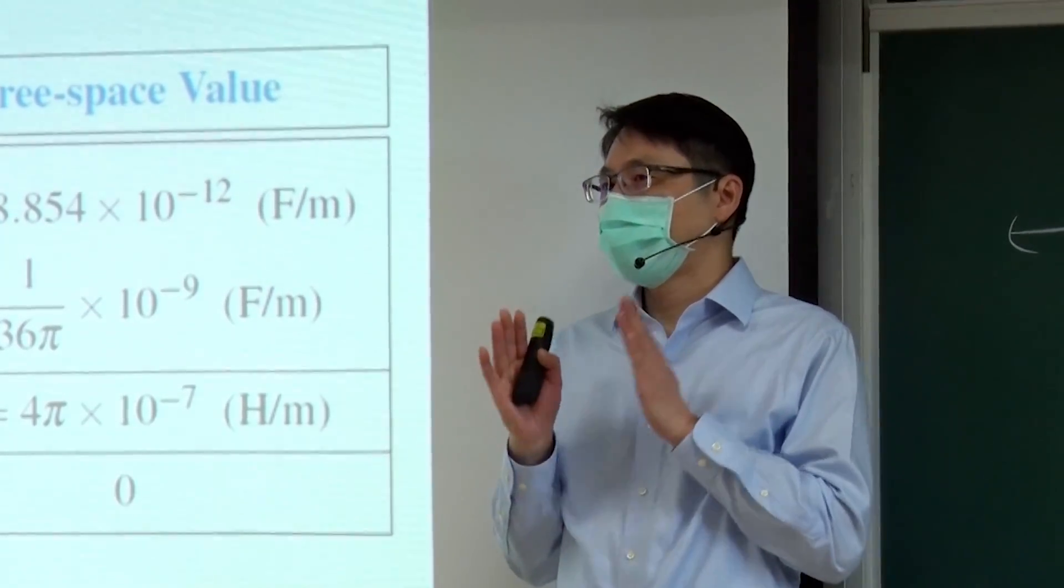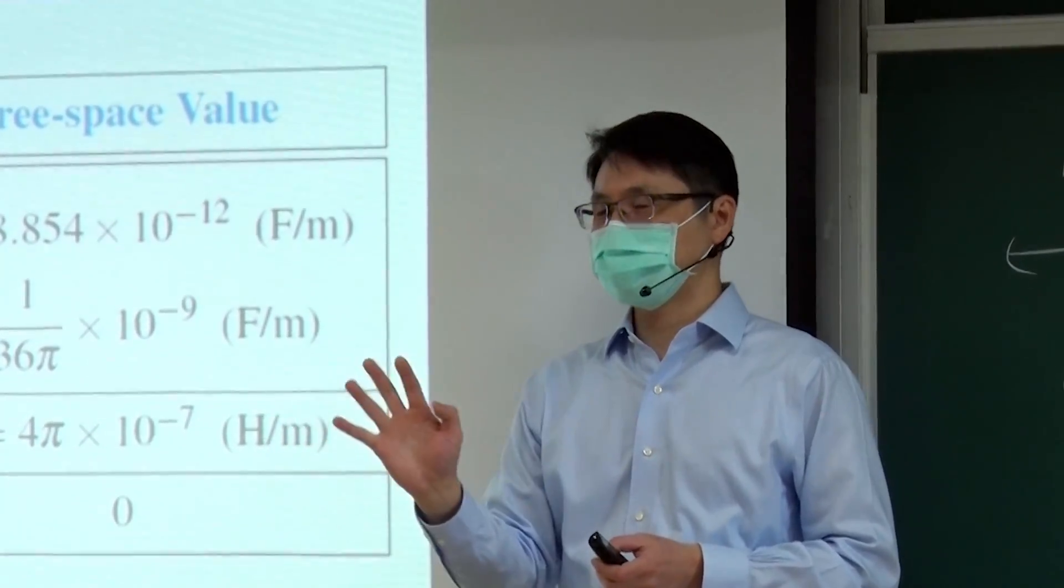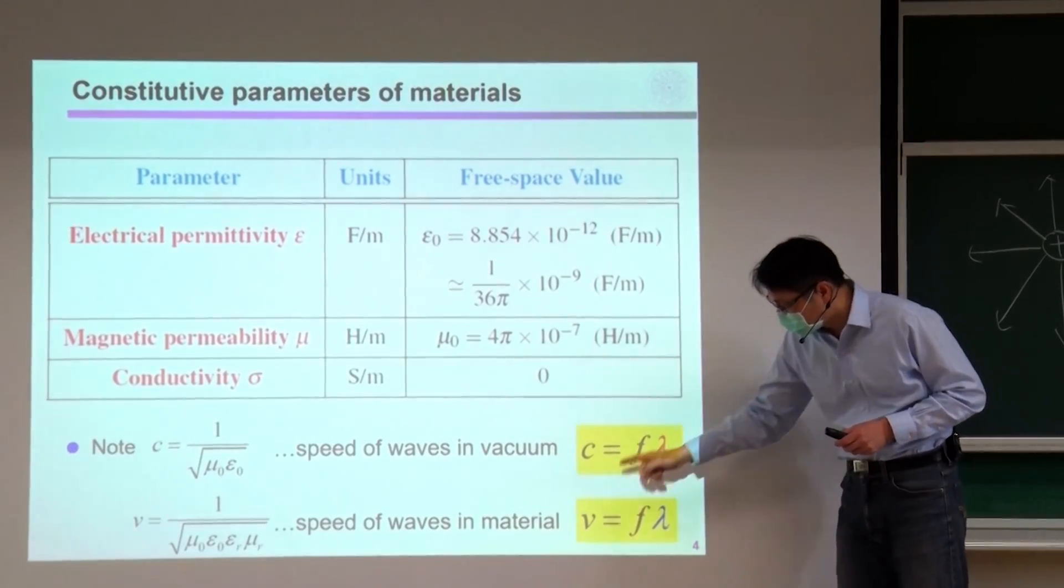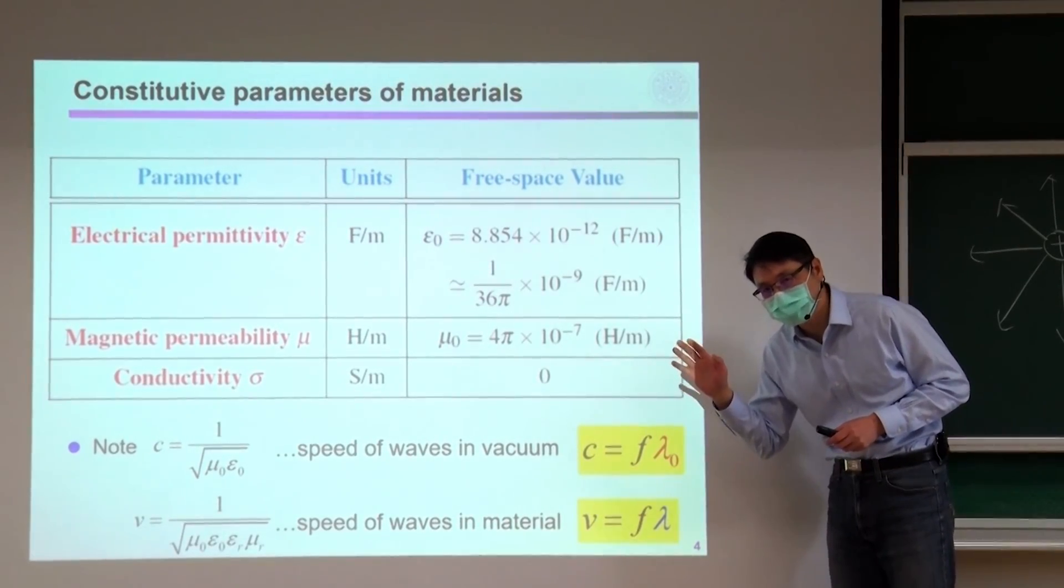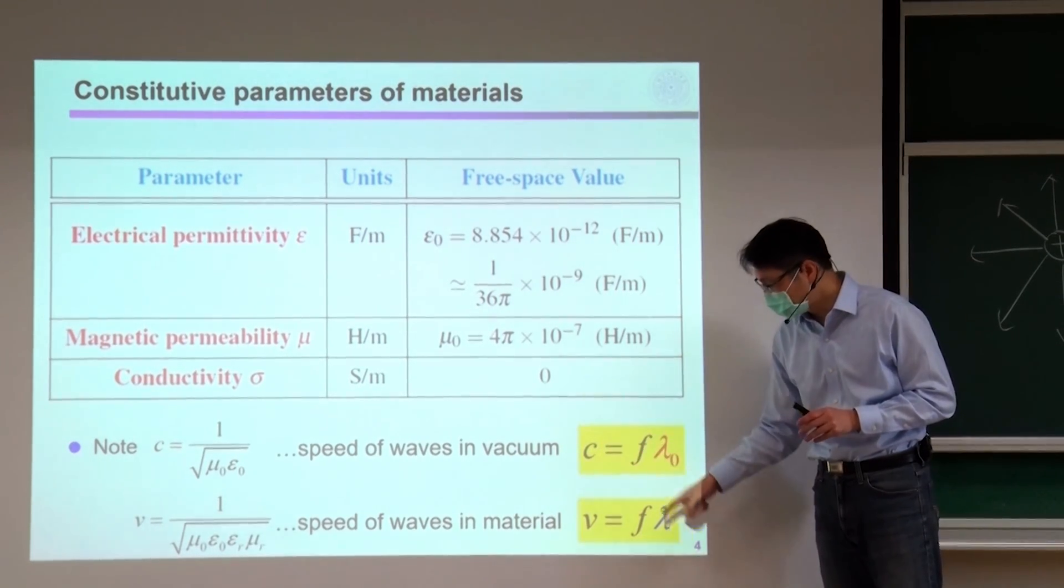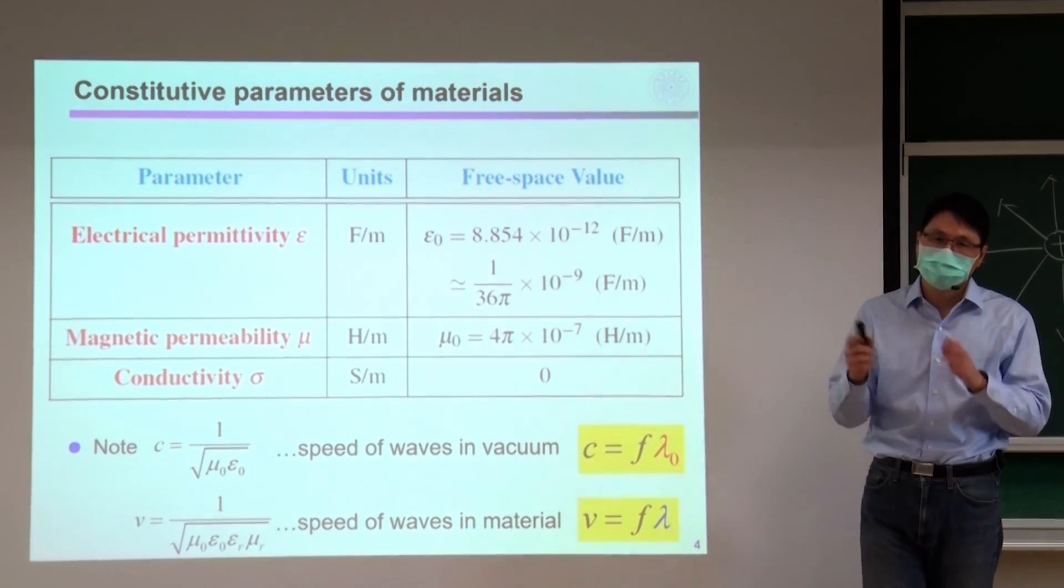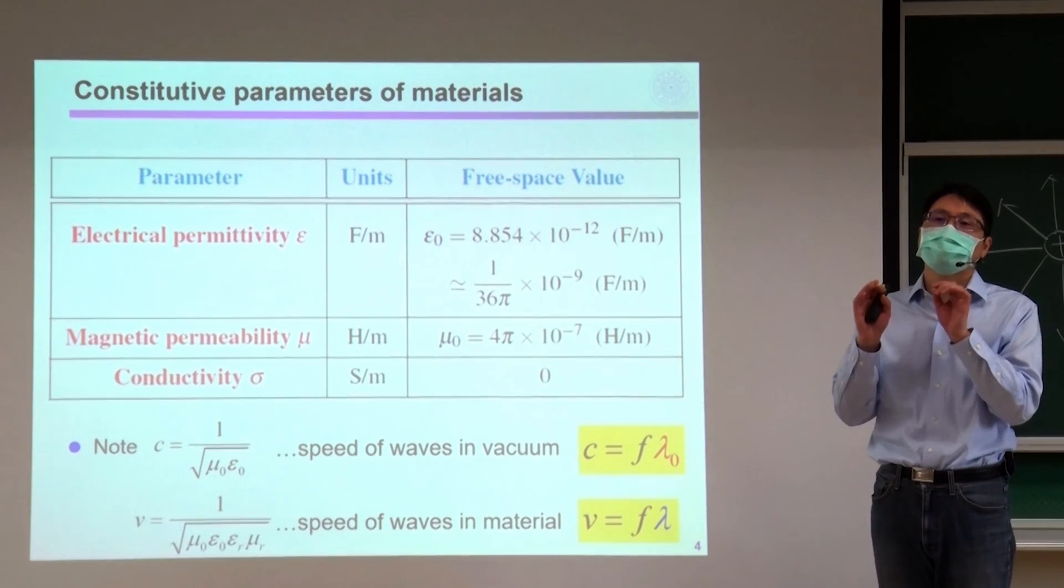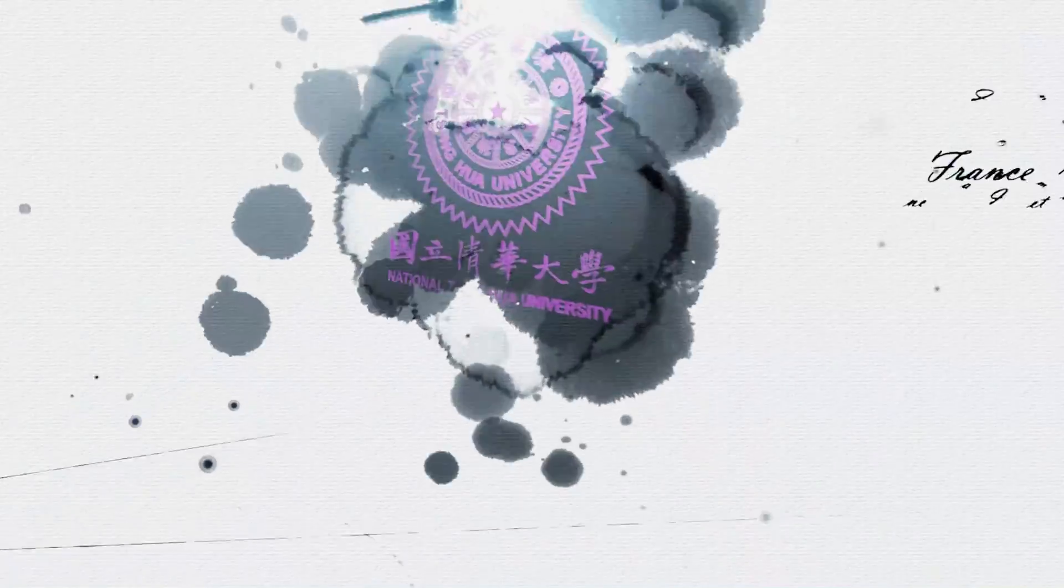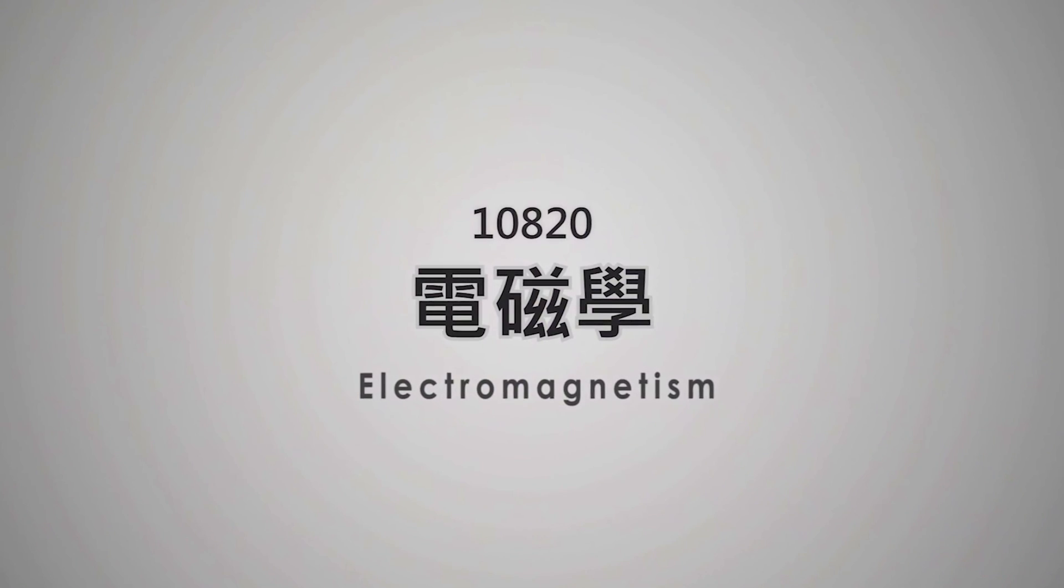So if that is true, can you tell yourselves, given the fact V, the speed of wave in certain material, is guaranteed to be lower than C, what is the relationship between lambda and lambda zero? So take the next 10 minutes and try to teach yourself how to relate these two. And then you can remember forever.